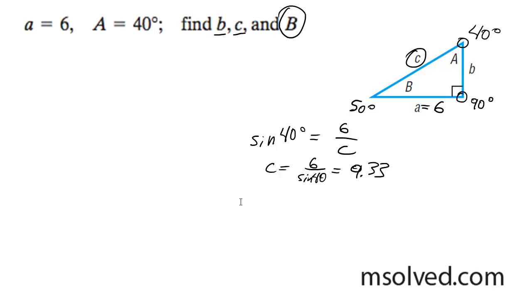Then I'm going to solve for side b. So sine of 50 degrees equals b over c, which is 9.33.